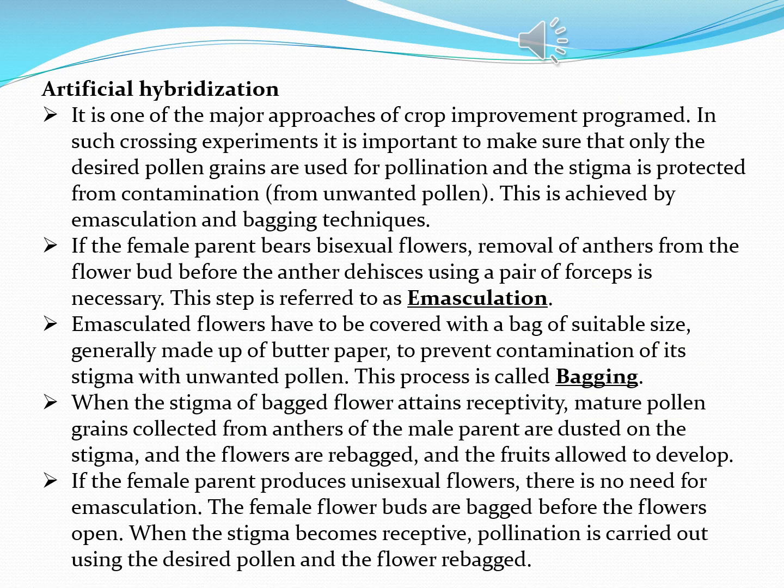In this slide we are going to discuss about artificial hybridization. The name itself indicates it is not a natural process — there is an intervention of humans. This process can be achieved by emasculation and bagging techniques. It is done to bring improvements in the crop. Desired pollen grains are used for pollination, and stigmas are protected from contamination by unwanted pollens.